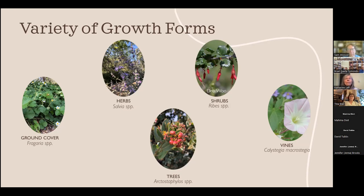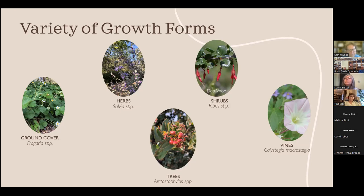A question came up about what biome or eco-zone we're in here in the Claremont and Botanic Garden area. I would lean toward calling it chaparral scrub — not entirely desert, more intermediate, a bit more moisture than desert but still pretty dry compared to a marsh or the coast. I'd need to confirm that, so don't quote me on it.